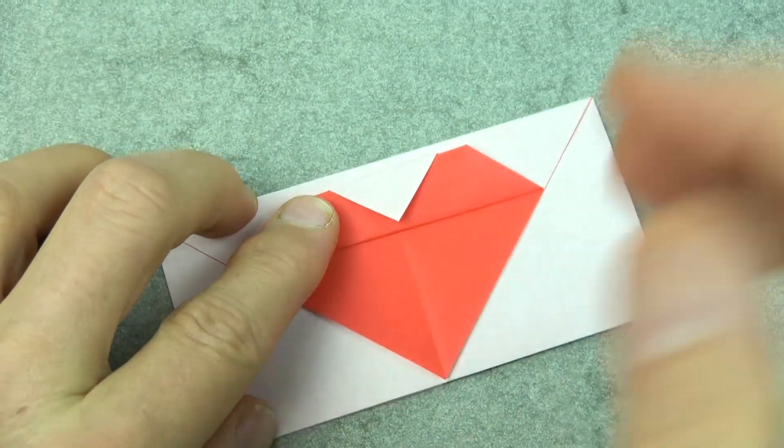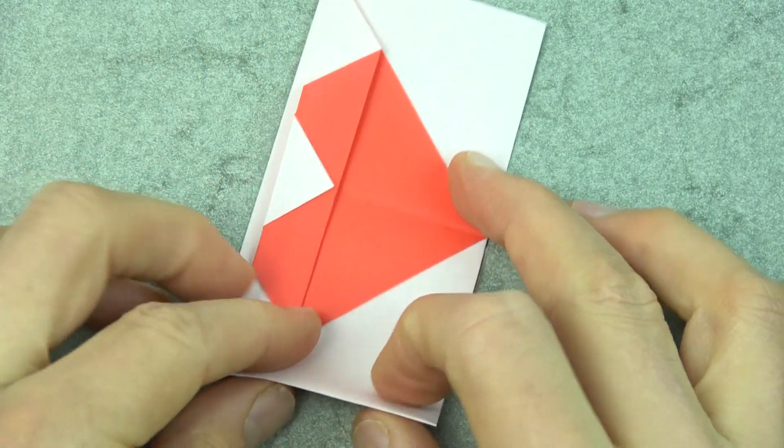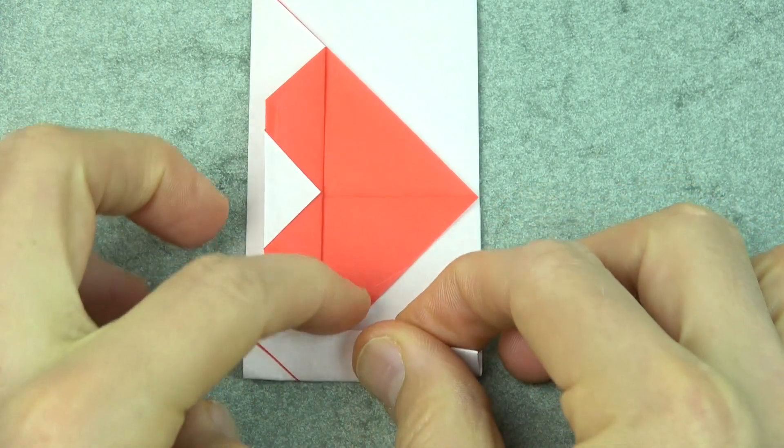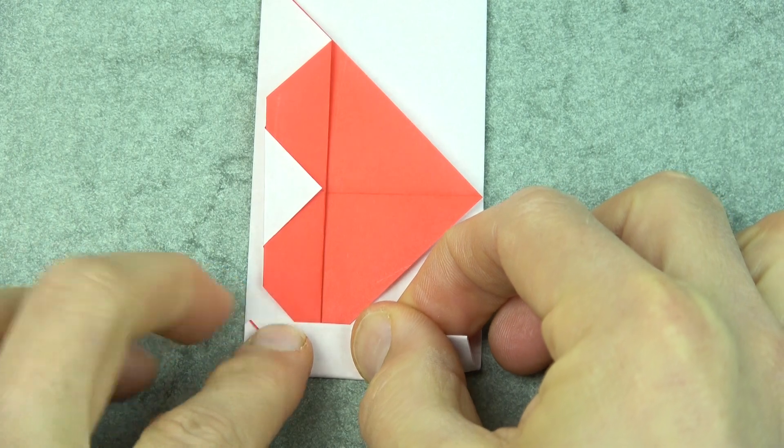And now rotate and fold this flap so that it covers this corner and it rounds the heart like this.